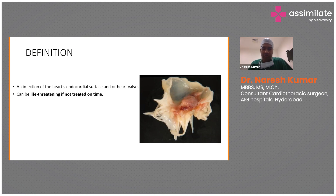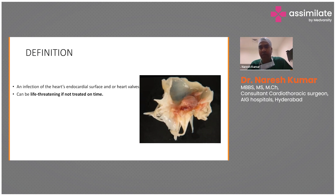Normally, the endocardial tissue or endothelium is resistant to infections because it constantly secretes nitric oxide and prostacyclins, which prevents platelet aggregation and thereby prevents the formation of any aggregates in the heart valves or chambers, so there won't be any colonization of organisms within these platelet aggregates.